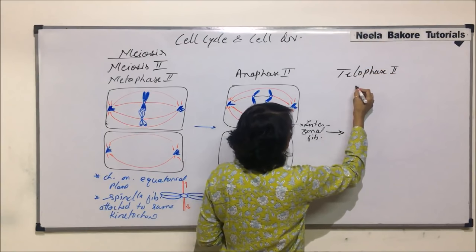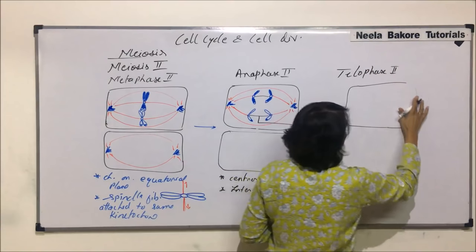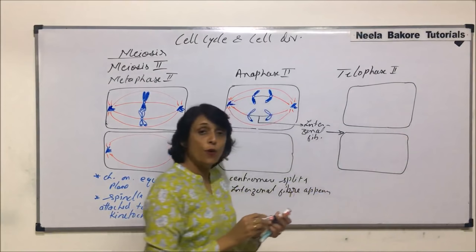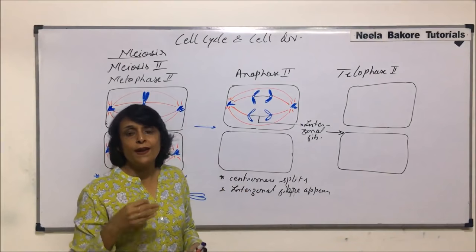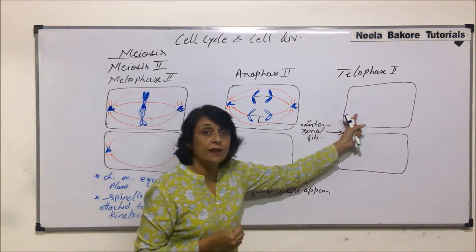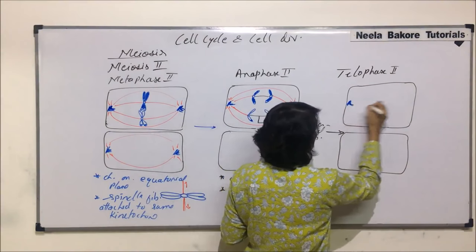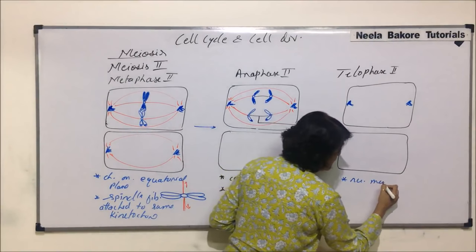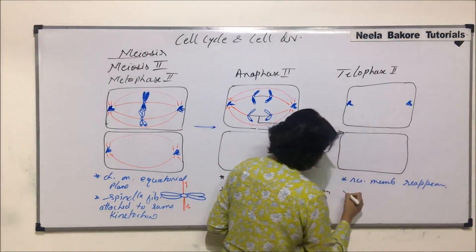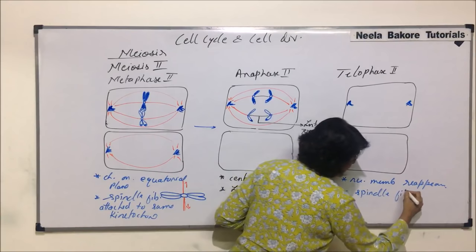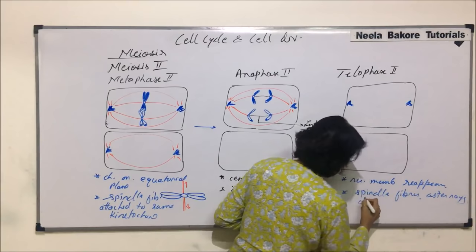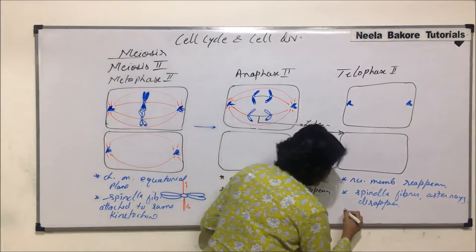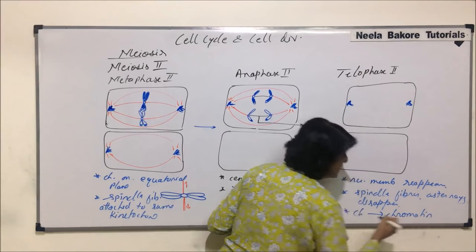What has happened in telophase 2? These are the two cells. The changes which take place in telophase are the reverse of what happens in prophase. In prophase 1 or prophase 2, nuclear membrane dissociates and disappears, spindle fibers appear. Everything is reversed. So the centrioles are here at the poles. Asters and spindle fibers have disappeared. What happens in telophase: nuclear membrane reappears, spindle fibers and asters disappear, and the chromosomes de-condense to become chromatin — that is, the thin fibers.